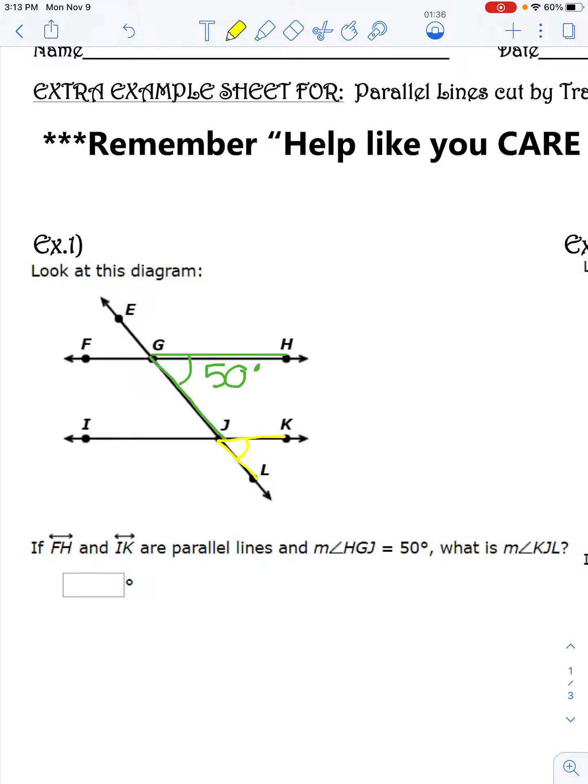Our angle in green is 50 degrees and it's in the bottom right corner of the top intersection. The yellow angle is in the bottom right corner of the second intersection.